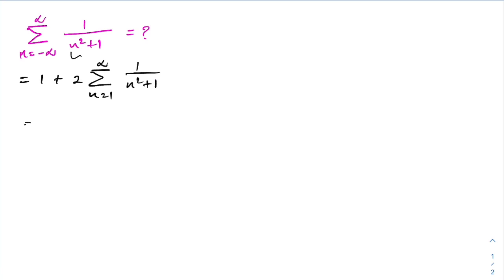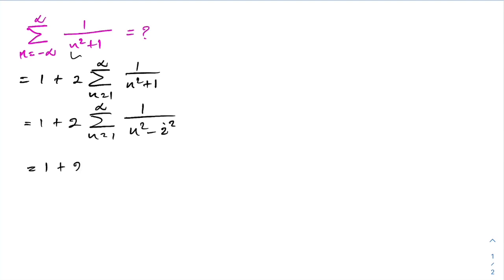Then we have 1 plus 2 times the sum from n equals 1 to infinity of 1 over n squared plus 1. Instead of plus 1, we can write minus i squared. So we can write the denominator as a difference of two squares: n minus i times n plus i.